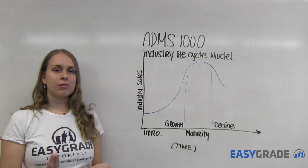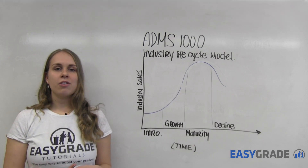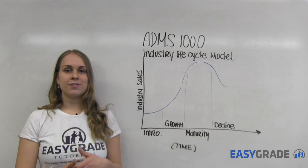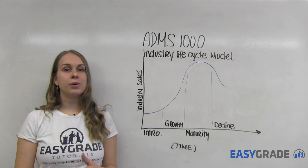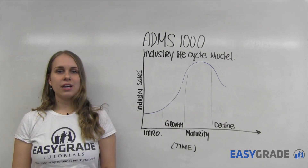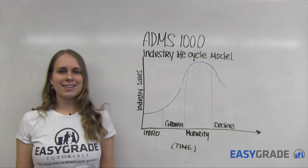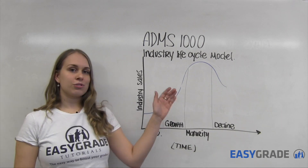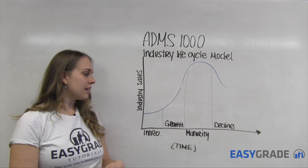When it reached the growth phase, a lot of people started to enter the market with different types of CD players, different types of computers and other technology. Everyone had a CD, and this is how sales grew very rapidly.